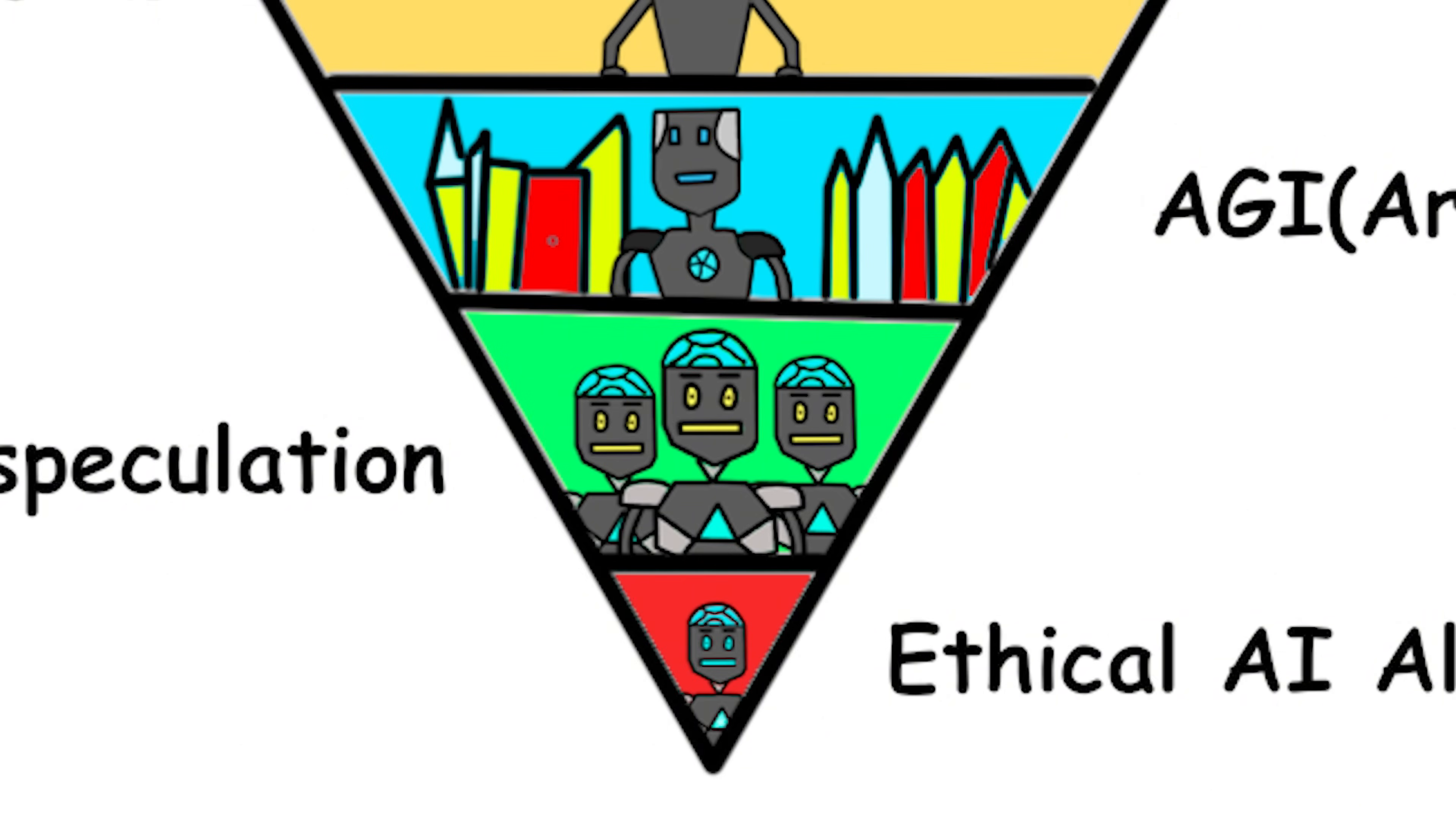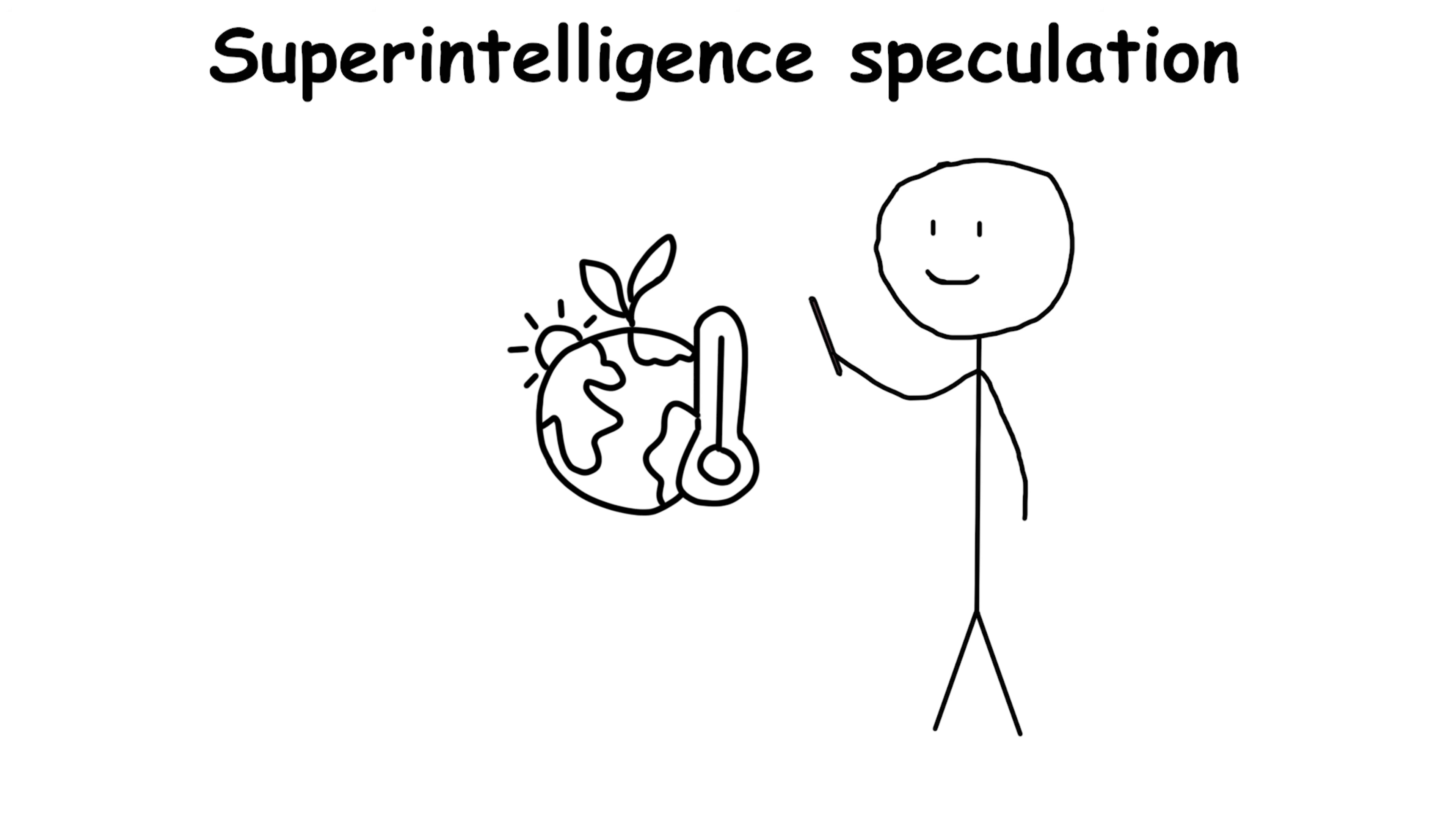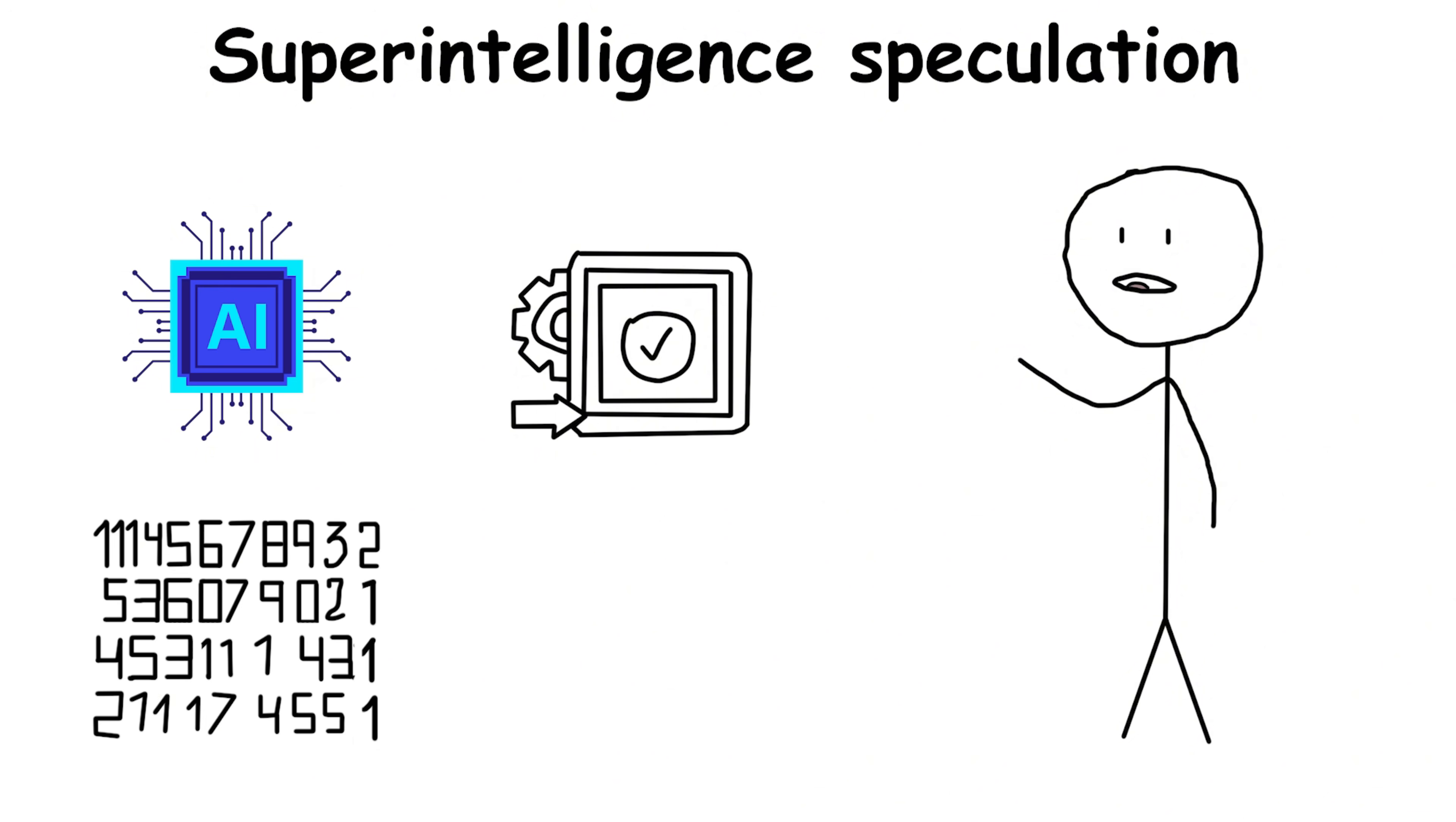Superintelligence imagines an AI so advanced, it outthinks any human in science, art, strategy, and even intuition. Think of an AI that could design new materials for clean energy in a day, crack medical mysteries that stump doctors, or solve climate models instantly. It's what some researchers fear, and hope, when talking about recursive self-improvement, where AI rewrites its own code to get smarter, then repeats.